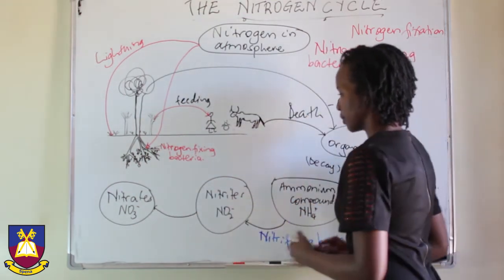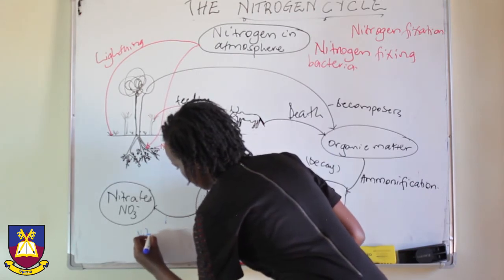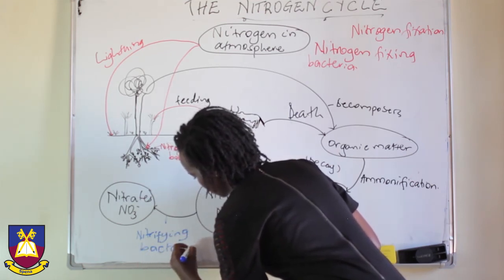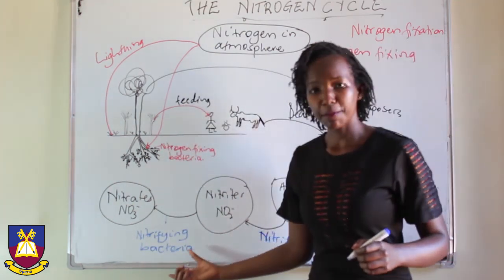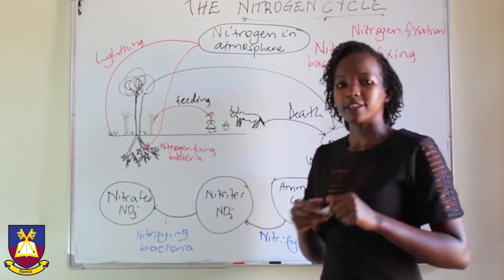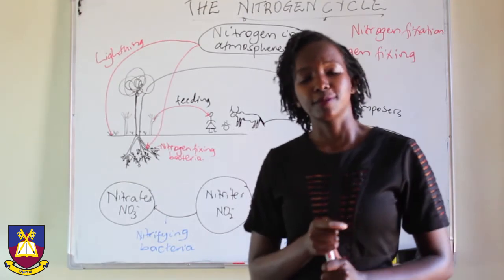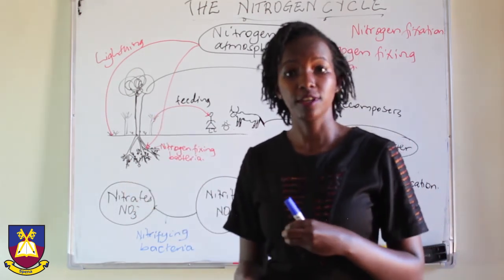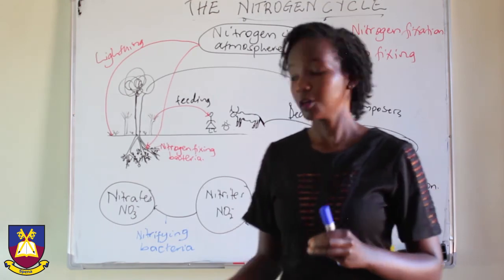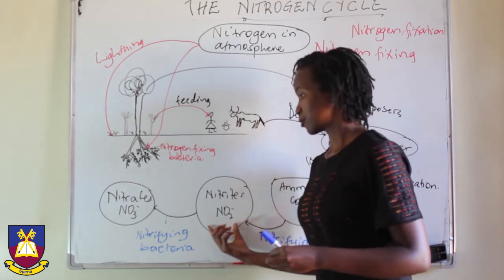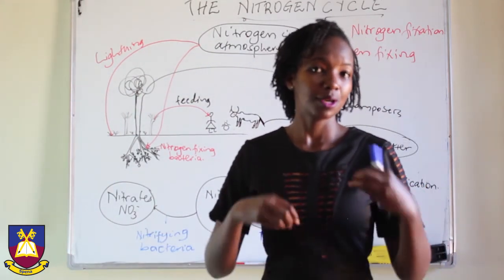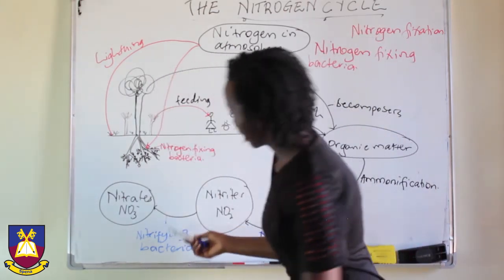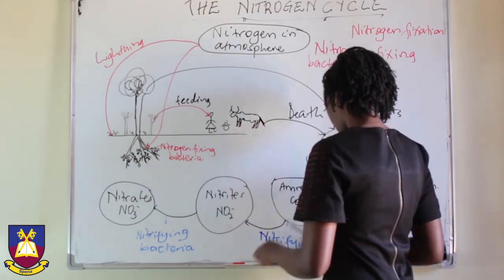This conversion is still by the action of nitrifying bacteria. They add oxygen to the nitrites to form nitrates, and in doing so they get the energy they need to make their own food. Unlike plants, they do not use sunlight energy — they use the energy from the oxidation of nitrites to nitrates, because they make their own food within the soil where sunlight cannot reach. These nitrates can then be absorbed by the plants.